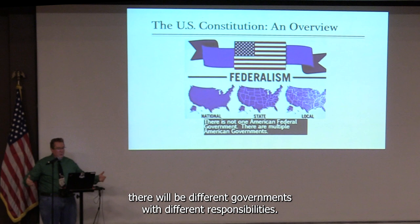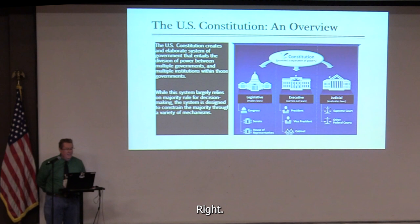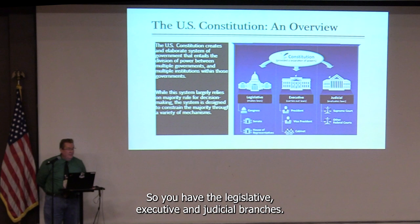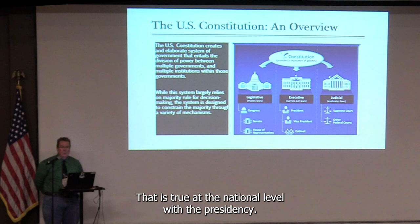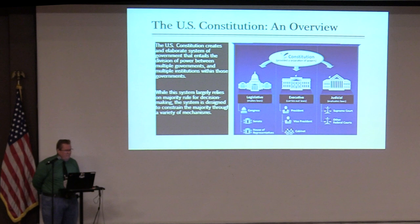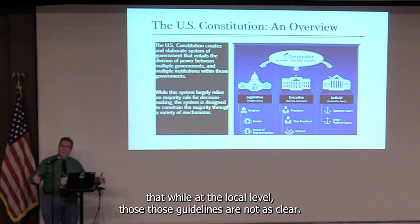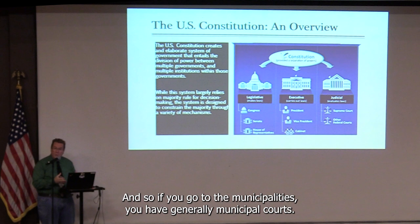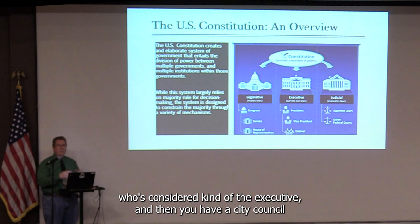Within those systems, each government has a framework of separation of powers, or three branches of government. You have the legislative, executive, and judicial branches — that is true at the national level with the presidency, Congress, and the courts, and it is true at all state levels as well. Even at local levels there is some division: municipalities generally have municipal courts, a mayor as executive, and a city council as the legislative body.